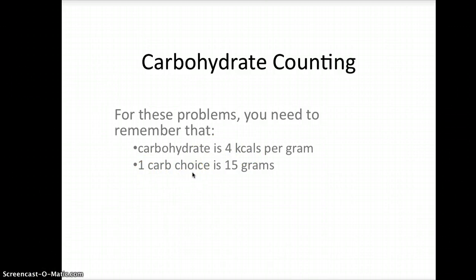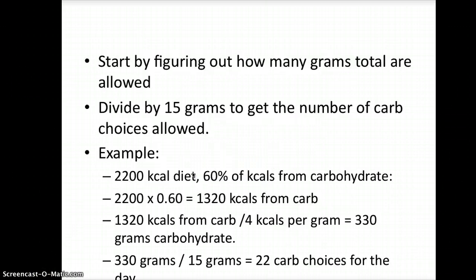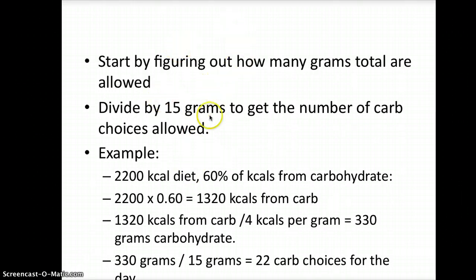It's a pretty simple, straightforward calculation. You need to start by figuring out how many grams total are allowed, and then divide by 15 grams to get the number of carb choices allowed.